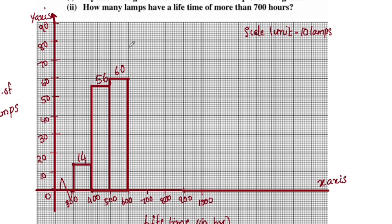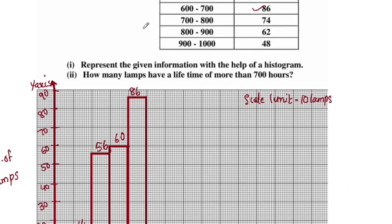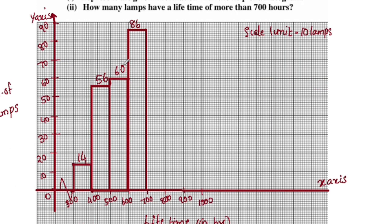The bar from 600 to 700 is plotted at 86 — we count up: 80, 81, 82, 83, 84, 85, 86. The bar from 700 to 800 is plotted at 74 — we count: 70, 71, 72, 73, 74.